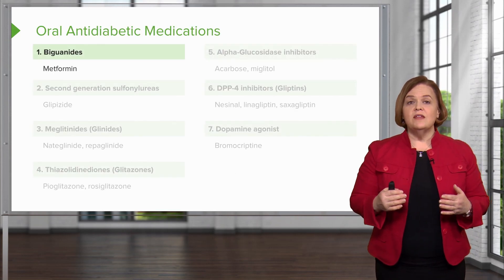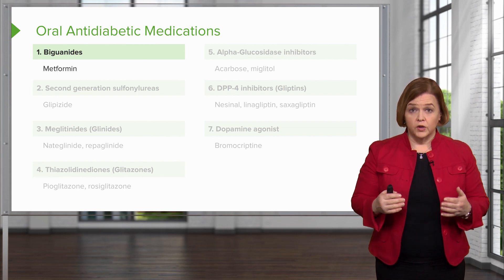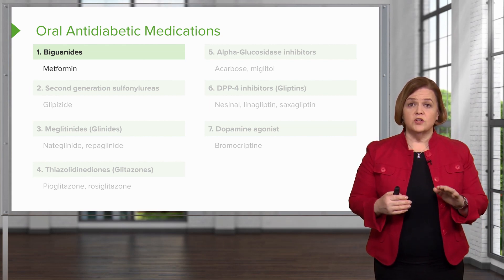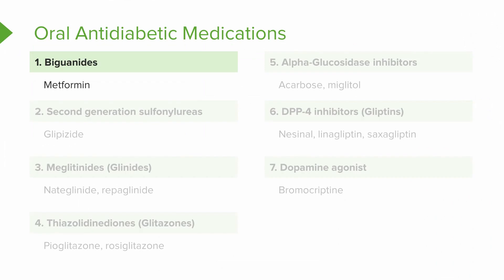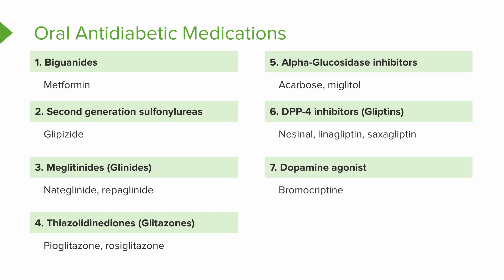There are seven families of oral antidiabetic medications that we're going to go over — so these drugs are taken by mouth. There's the biguanides, the second-generation sulfonylureas, the meglitinides (we call those the glinides), the thiazolidinediones (we call them glitazones), the alpha-glucosidase inhibitors, the DPP-4 inhibitors, and the dopamine agonists.